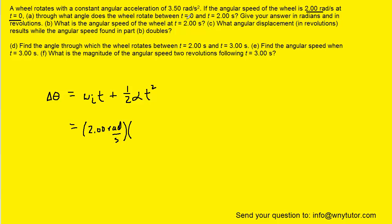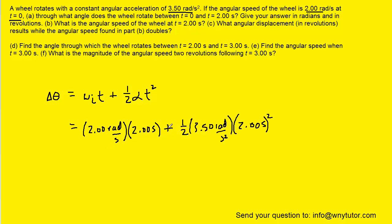Now we know that initially, at time zero, the angular velocity of the wheel is two radians per second, so we can plug that in for omega-i. To go from t equals zero to t equals two seconds is a total time of two seconds, so we can fill that in for the time. The angular acceleration is given to us as 3.5 radians per second squared.